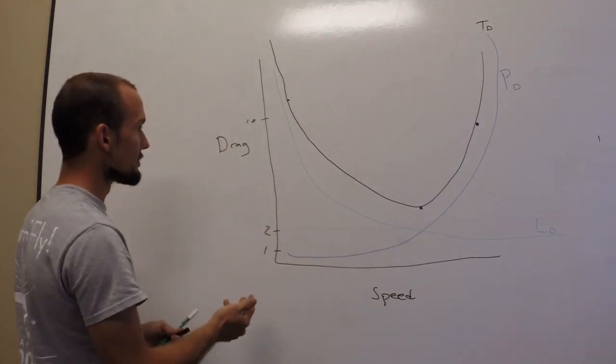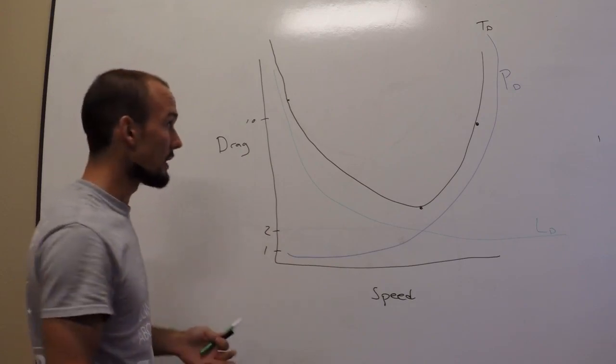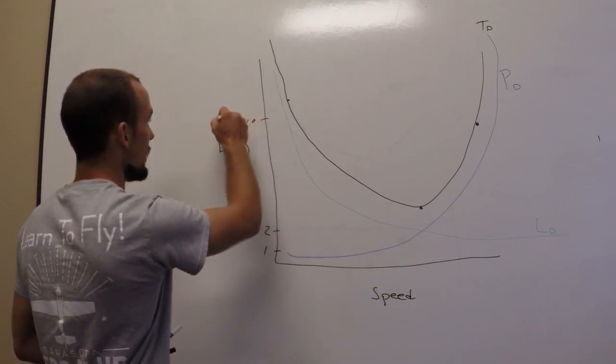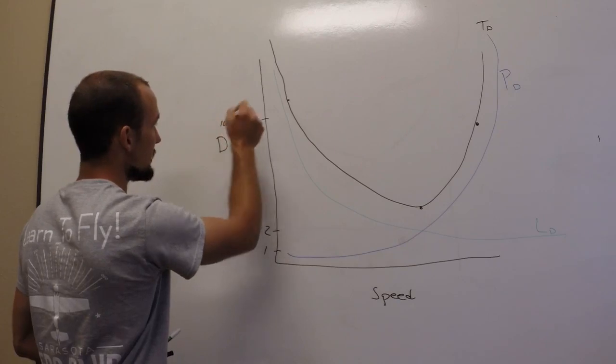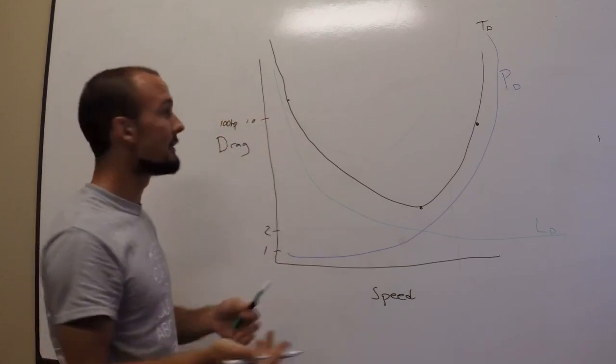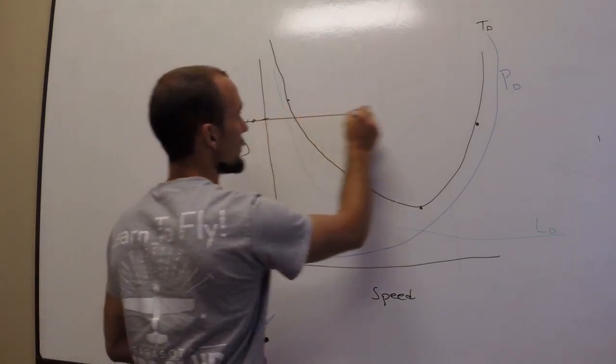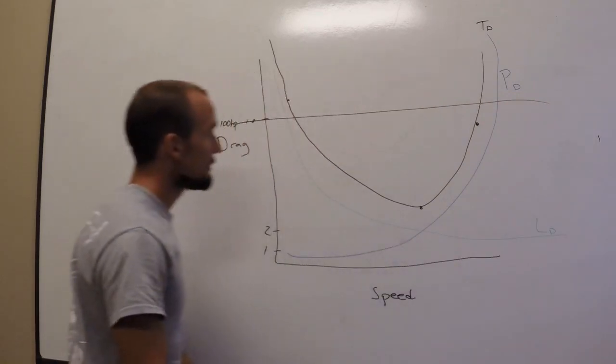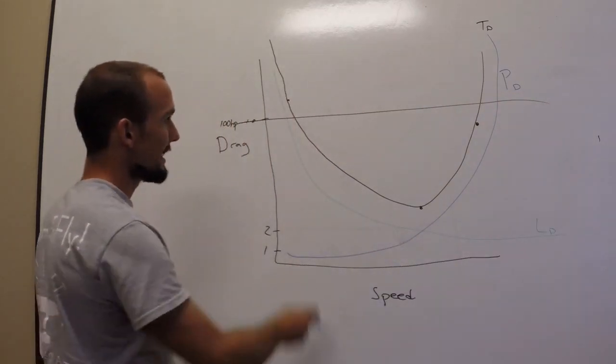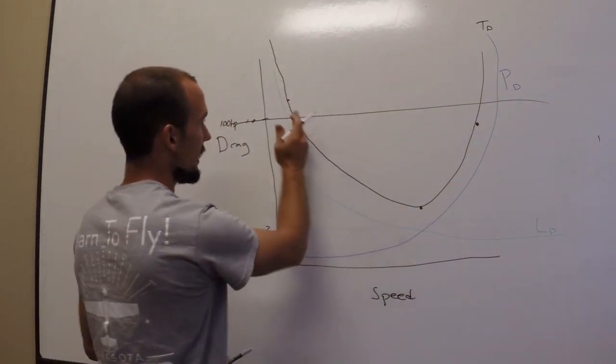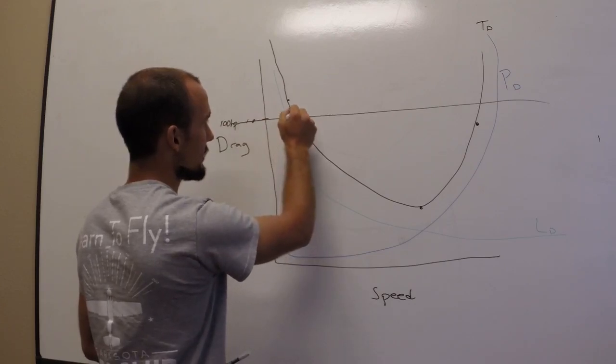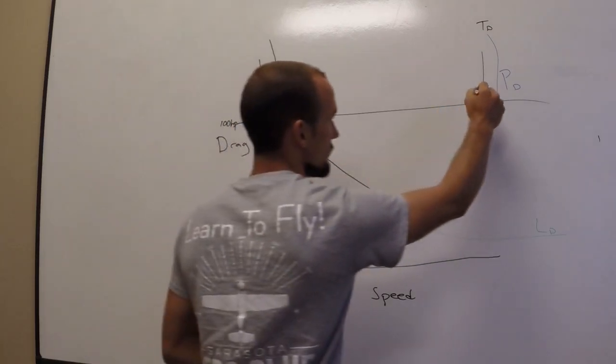Let's talk about what that means to us as pilots. Let's say these drag numbers are horsepower ratings. So we're just going to call this 100 horsepower. It happens to be the power that your average 150 puts out.